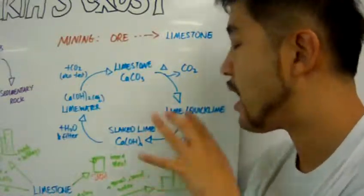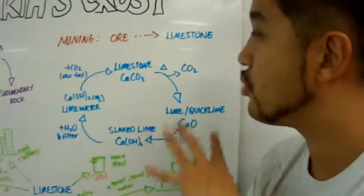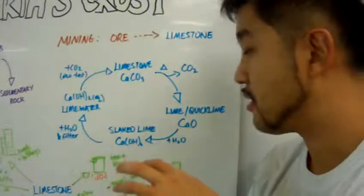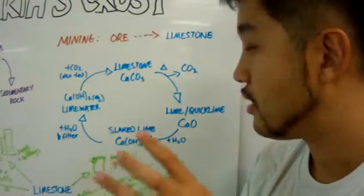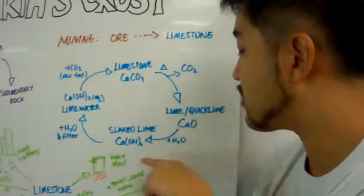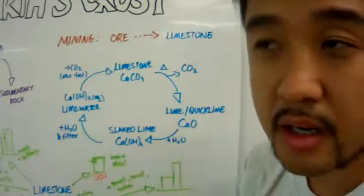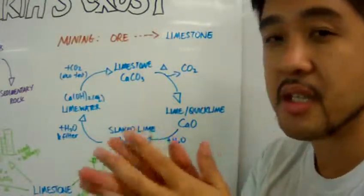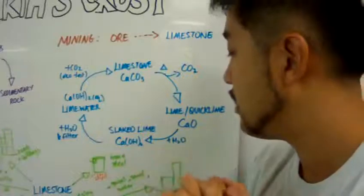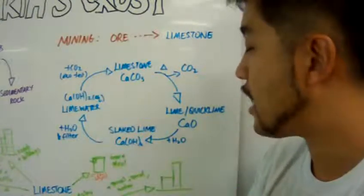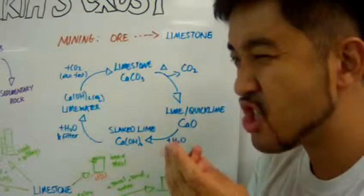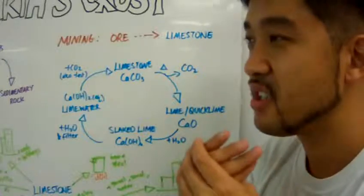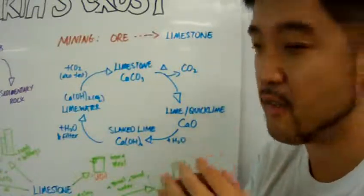And when you add a little water into quicklime, you're going to make slaked lime, which is calcium hydroxide. Now, slaked lime, the process of making slaked lime when you add a little bit of water is extremely exothermic. Exothermic meaning a lot of heat is released. And with slaked lime, it's basically just slurries, like mushy stuff.